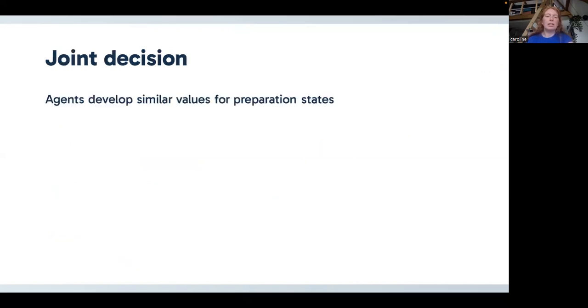What we will investigate is whether or not our agents will form a joint decision. A joint decision will be made when agents develop similar values for our preparation states. So this could be either negative or positive. So if our preparation states will be both negative, this still means our agents came to a joint decision, as well as if they are forming both high values, it also counts as a joint decision.